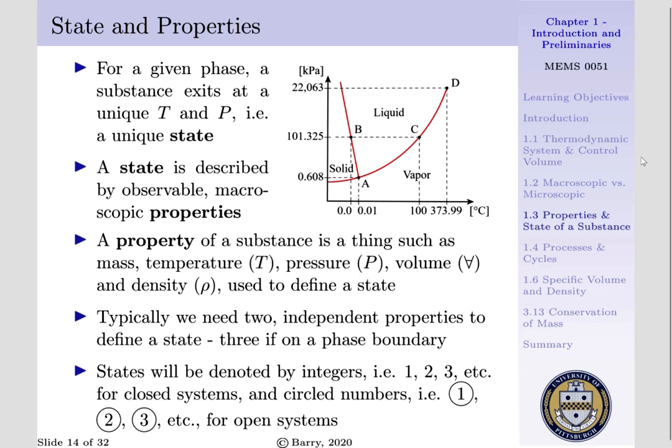Typically, we need two independent properties to define a state, and we need three if we exist on a phase boundary. For, if we only had temperature and pressure, we would not know if water is existing as a liquid or solid at point B, as a liquid or vapor at point C, or as a solid, liquid, or vapor at point A.